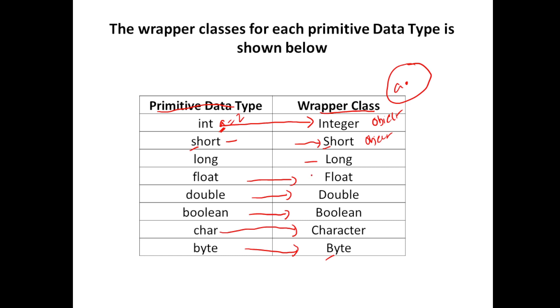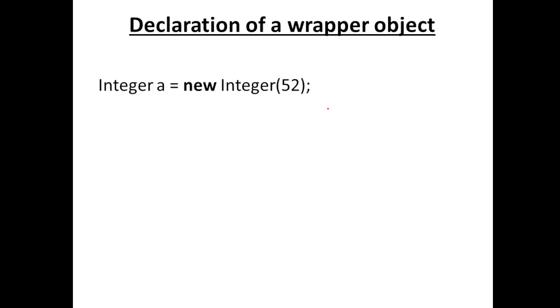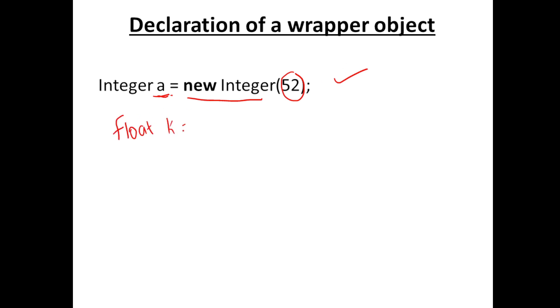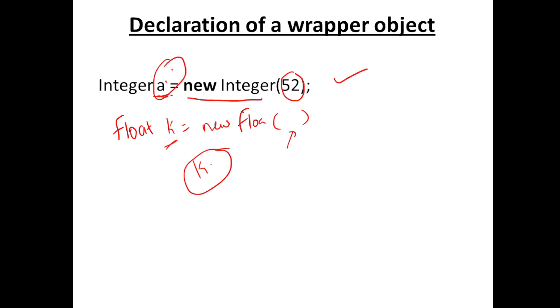To declare a wrapper object, say if I am creating an Integer object 'a', I use the new keyword: 'Integer a = new Integer(value)'. Similarly for float: 'Float k = new Float(value)' with capital F. Now 'k.' and 'a.' give you access to certain methods you can invoke — that's the idea of wrapper objects.